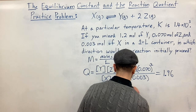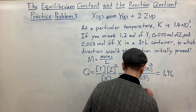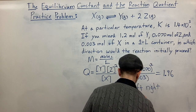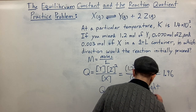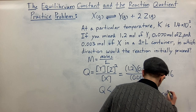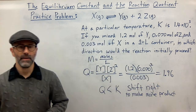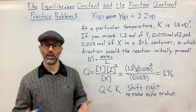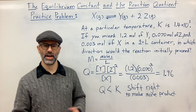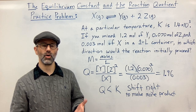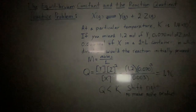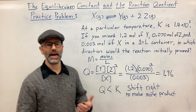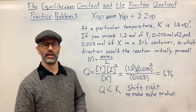So the answer is the reaction will shift right to make more product. That's how you use Q to determine whether or not your system is at equilibrium given a set of concentrations. Now let's talk about what factors can and cannot affect your equilibrium constant.